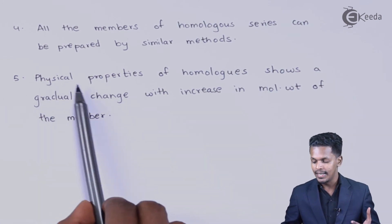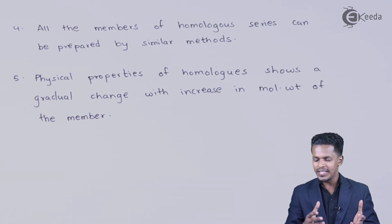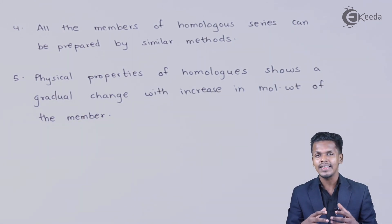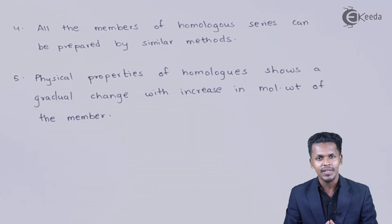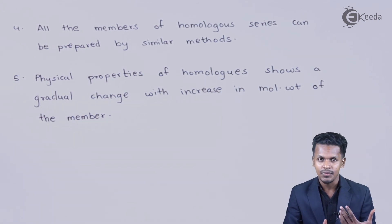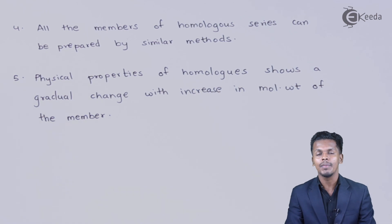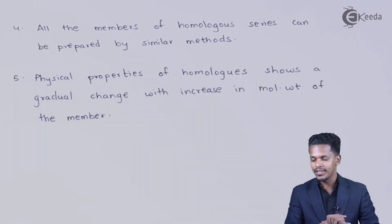The fifth characteristic is that the physical properties of homologs show a gradual change with increasing molecular weight. Physical properties such as boiling point, melting point, and density change as we move through successive members. For example, the lower members of alkanes are in a gaseous state, the middle members are in a liquid state, and the higher members can be in a solid state — showing how melting point, boiling point, and density differ across the series.